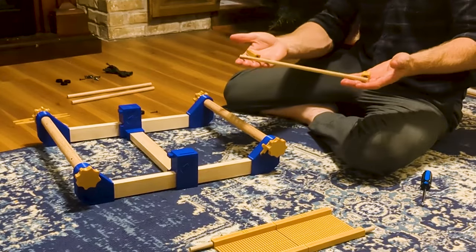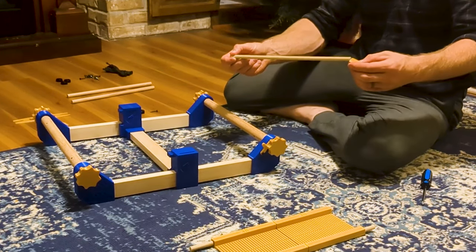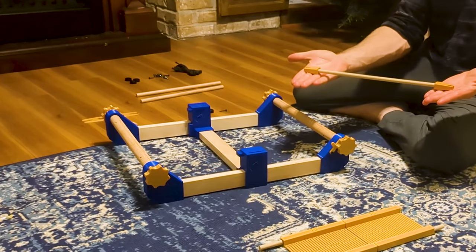To assemble the stick shuttle, take one of the remaining pieces of dowel and then the two stick shuttle ends, and just slide the dowel into each of the stick shuttle ends. And just like that, it's complete.